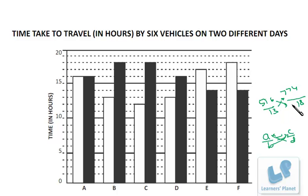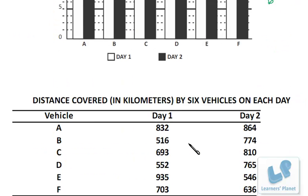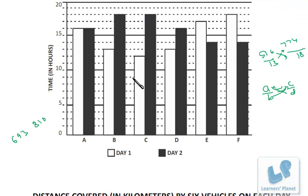Similarly we can check for C. C is 693 and 810. Now C, on the first day it is 12, on the second day it is 15, 16, 17, 18. The same thing we'll do over here. Here the unit digit is 4, here the unit digit is 0, so even C is not the correct choice.